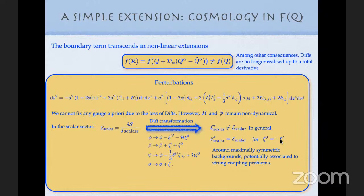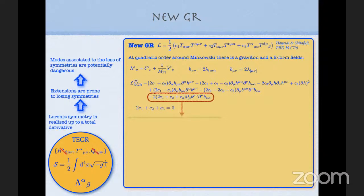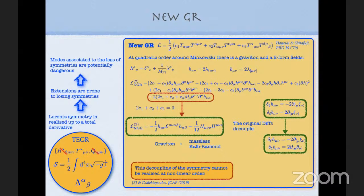The same issues occur in teleparallel theories with torsion: the local Lorentz symmetry is lost whenever you try to extend the theory beyond the special teleparallel equivalent, either by using a differently tuned quadratic form or non-linear extensions, and then you get additional ghost-like degrees of freedom associated to the breaking of those gauge symmetries. So both symmetric and standard teleparallel extensions share these pathological features.